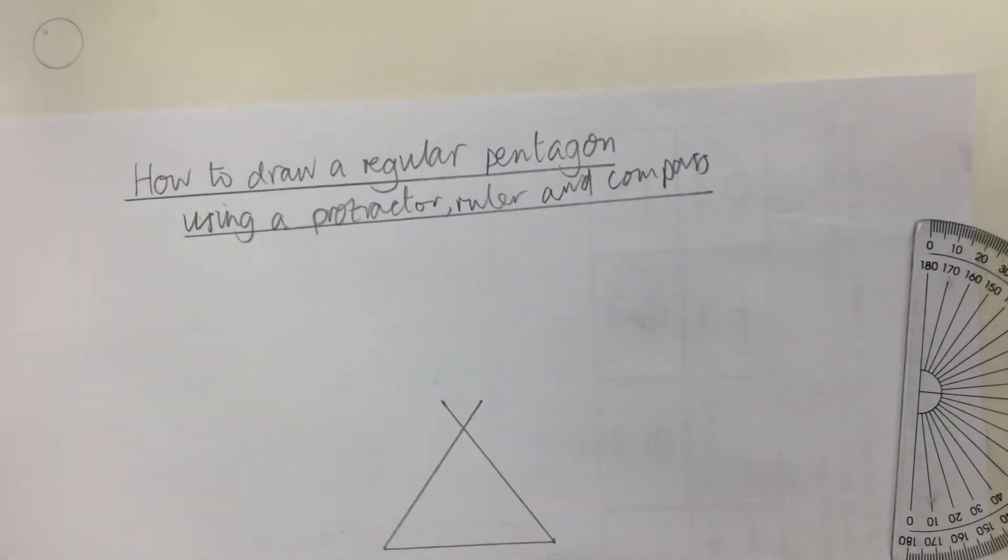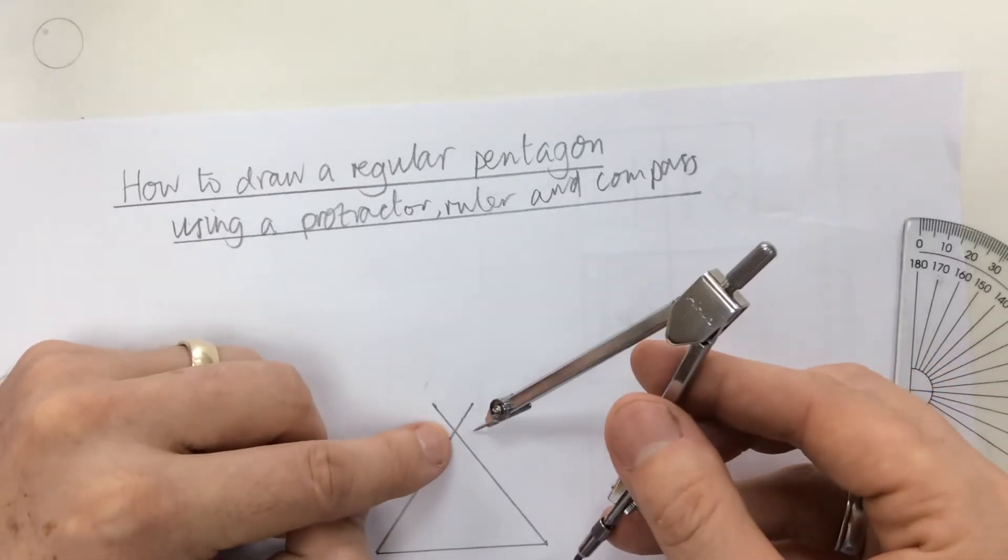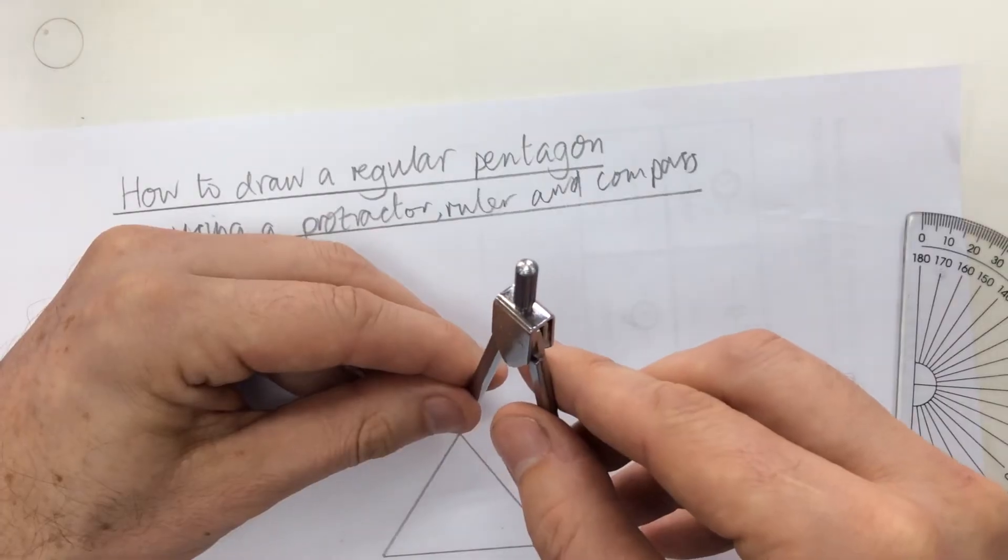So once I've done that, what I need to do is to create a circle from this point. Now this point is going to be the centre point of our pentagon.